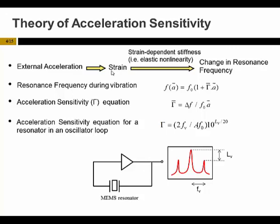In theory we can use the shift of resonance frequency to determine a matrix to evaluate the acceleration sensitivity of the resonator. However, in practice, since this delta-f is a very small value, we cannot measure it directly, so we have to employ the resonator in an oscillator circuit and then use another equation to find the value of the acceleration sensitivity.